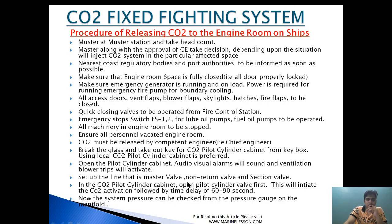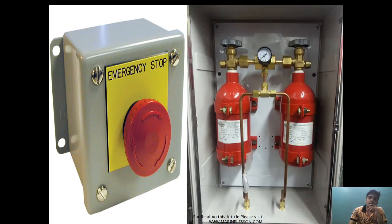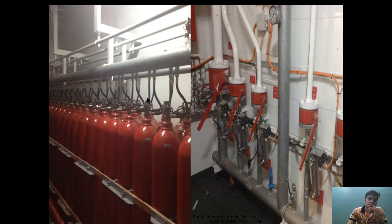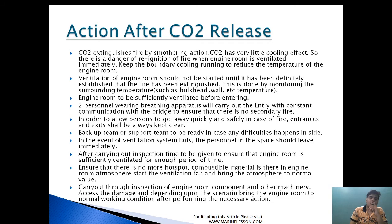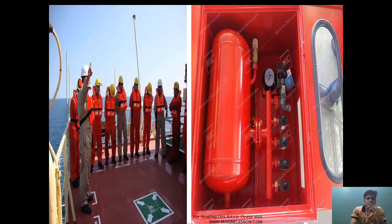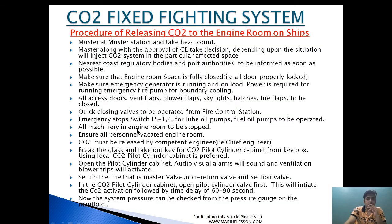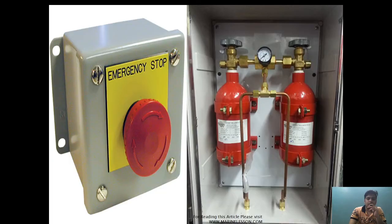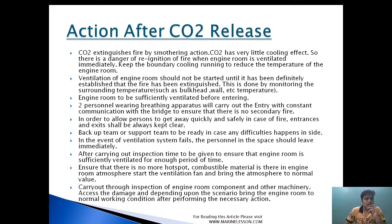Set up the line — master valve, non-return valve, section valve — then open the pilot cylinder first. This initiates CO2 activation followed by a time delay of 60 to 90 seconds. System pressure can be checked from the pressure gauge on the manifold. Opening the pilot cylinder causes CO2 to puncture the bulk system, and pressure is visible on the manifold. CO2 then travels through the section valve to the protected space to extinguish the fire. A second headcount is performed before operating the pilot cylinder to doubly confirm all personnel are clear.